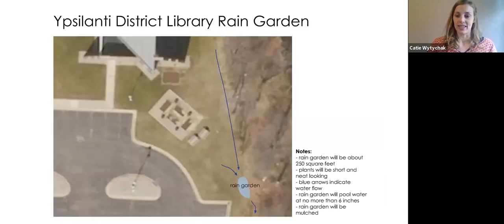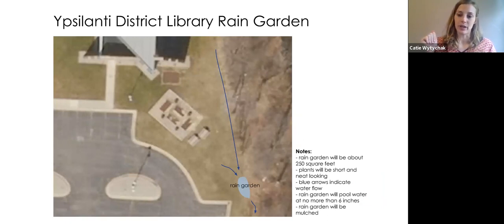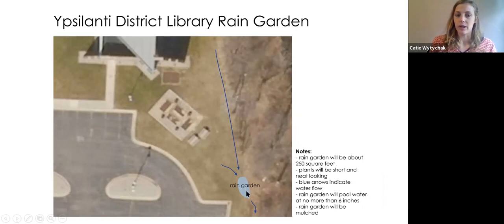I'm going to show you a few examples of designs that I've done. This is one for Ipsy District Library out on Whitaker Road. Before I start drawing up my design, I look at an aerial map — an image from above, as if you were a bird flying over the parking lot and the building. I talked to the people in the library and we decided this would be a good spot for a rain garden because it will capture all this water — you can see water flowing in blue lines. It's also pretty close to the building so they can still water it.